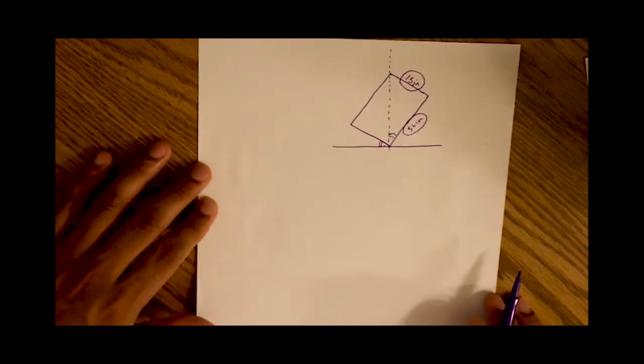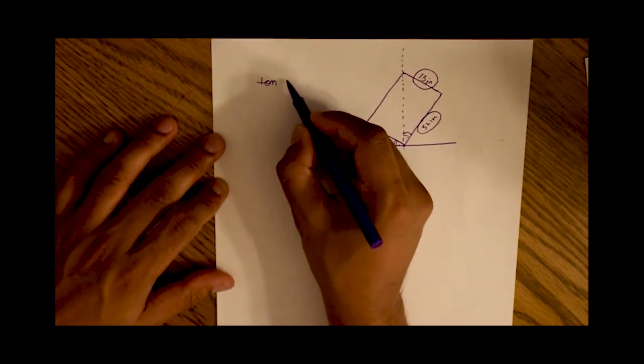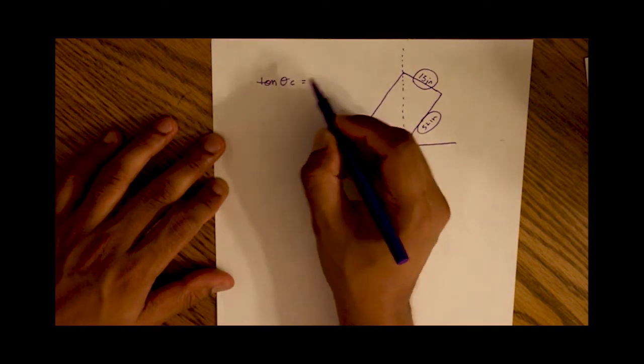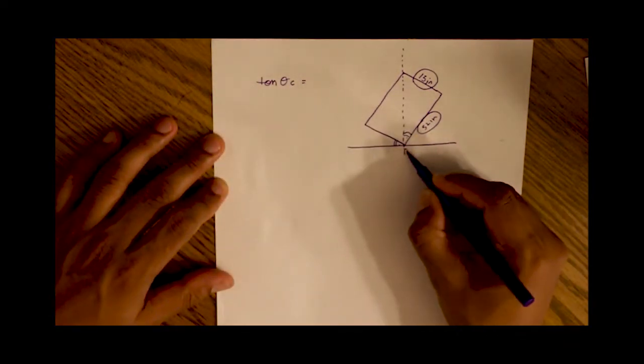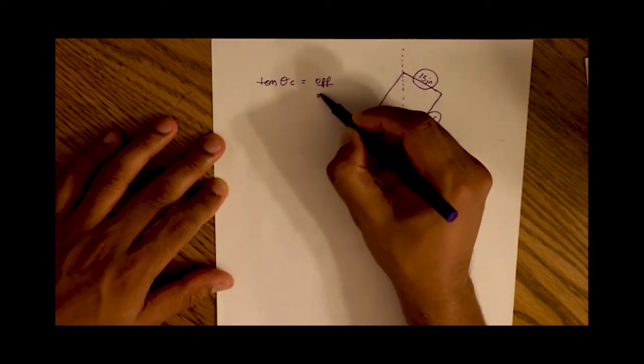So the tan of this angle is opposite over adjacent from trigonometry. So tan of the critical angle at the pivot point before it tilts over is opposite over adjacent.